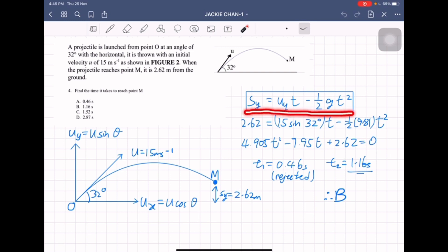We substitute sy, uy, and g, then we get the quadratic equation. We press the calculator and we get t1 equals 0.46, which means the time for the first time above 2.62 meters, and t2 equals 1.16.